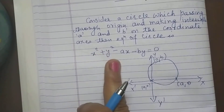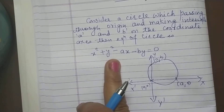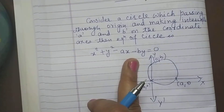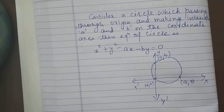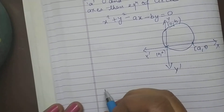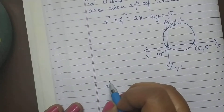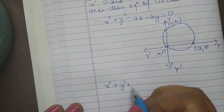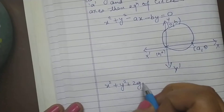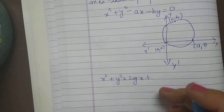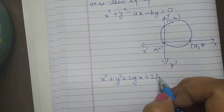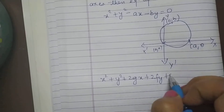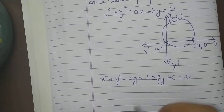How can we get this equation? As we know, the general equation of a circle is x squared plus y squared plus 2gx plus 2fy plus c is equal to 0. Now this circle passes through the origin.